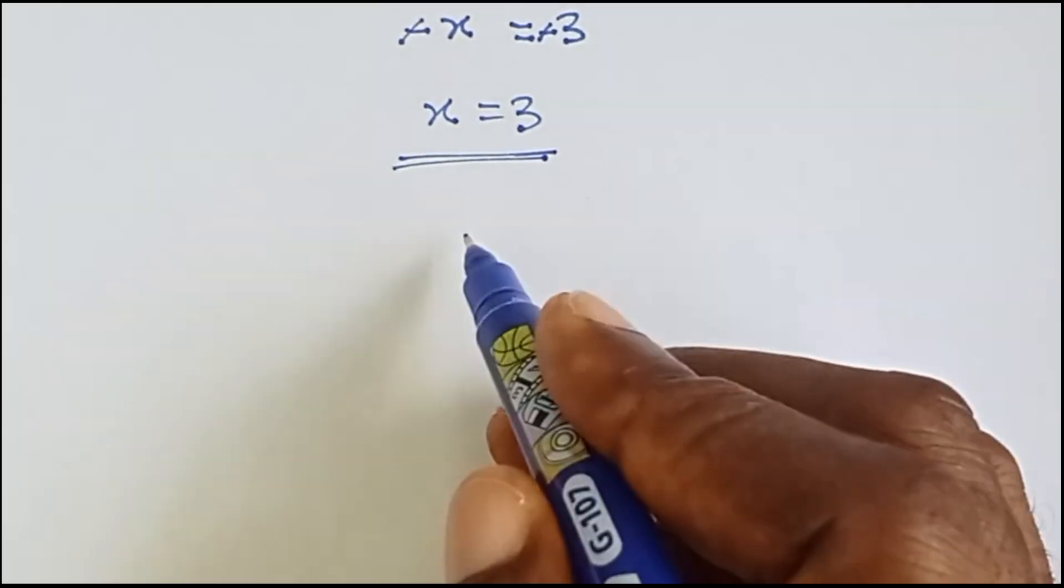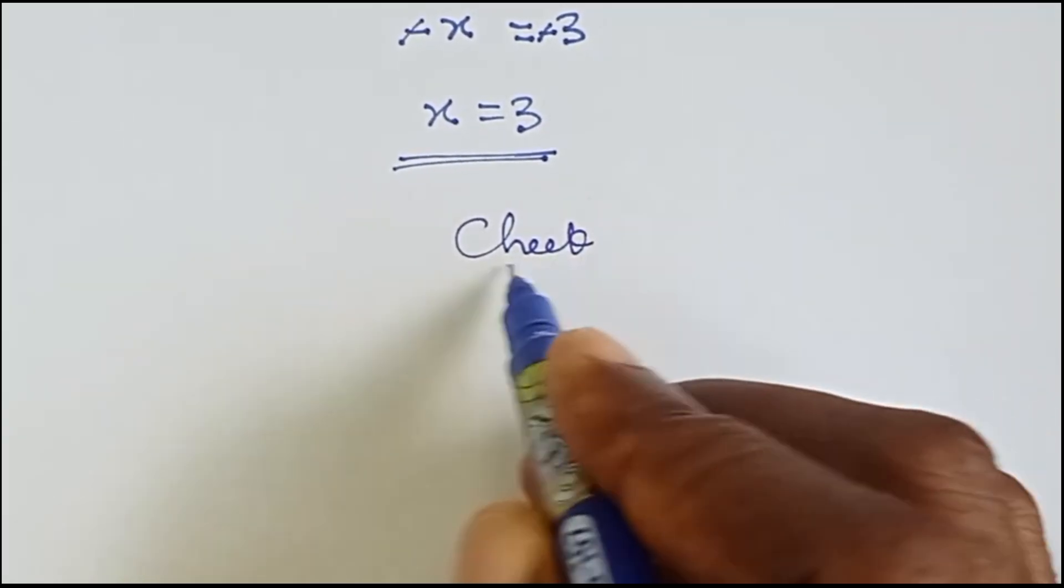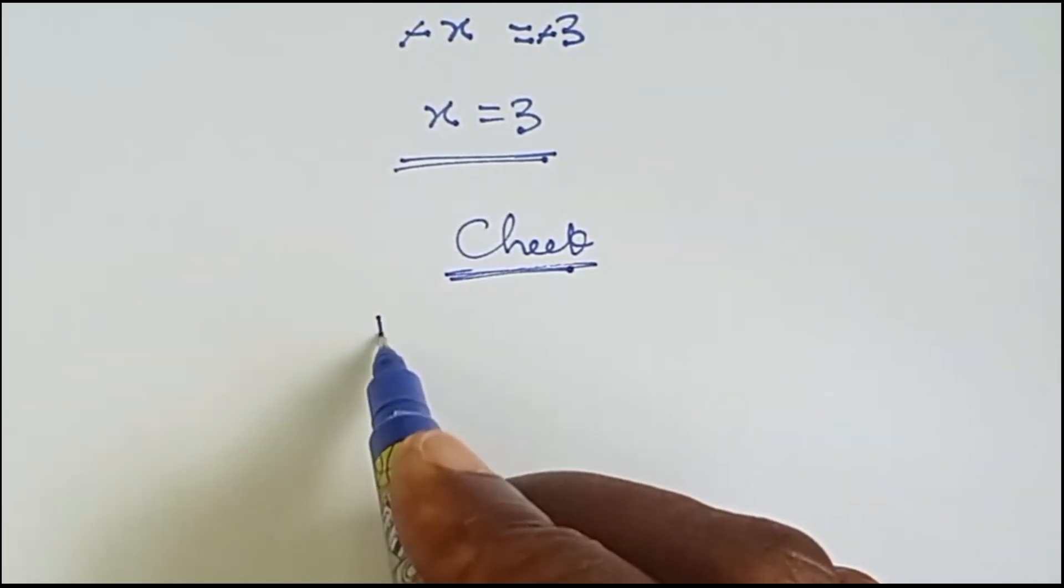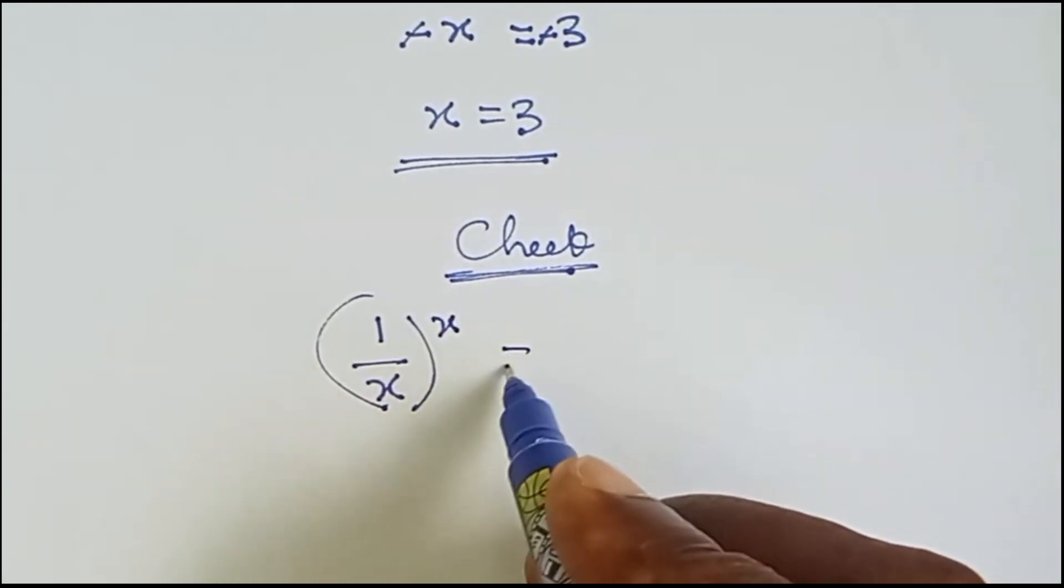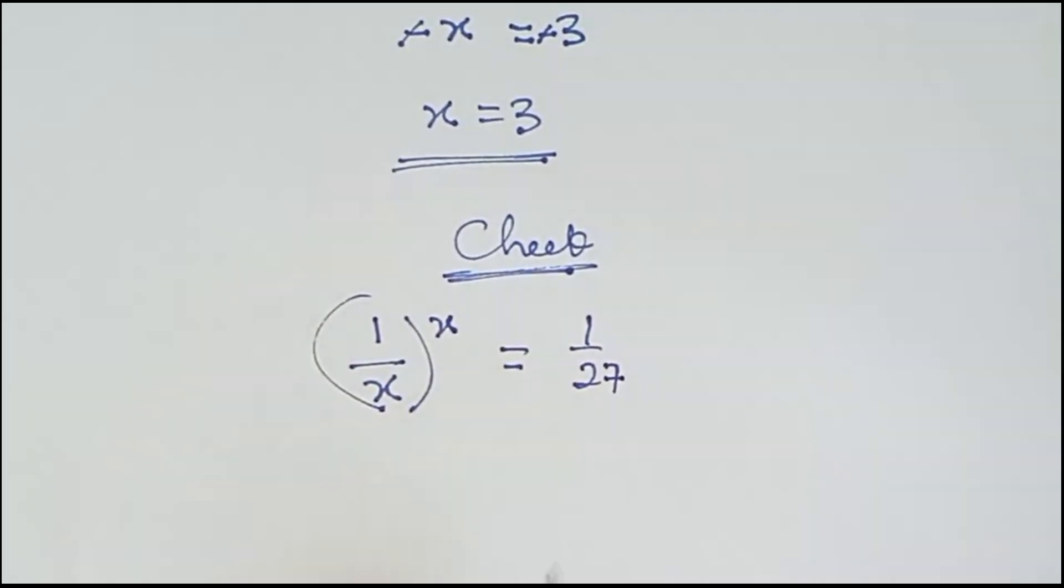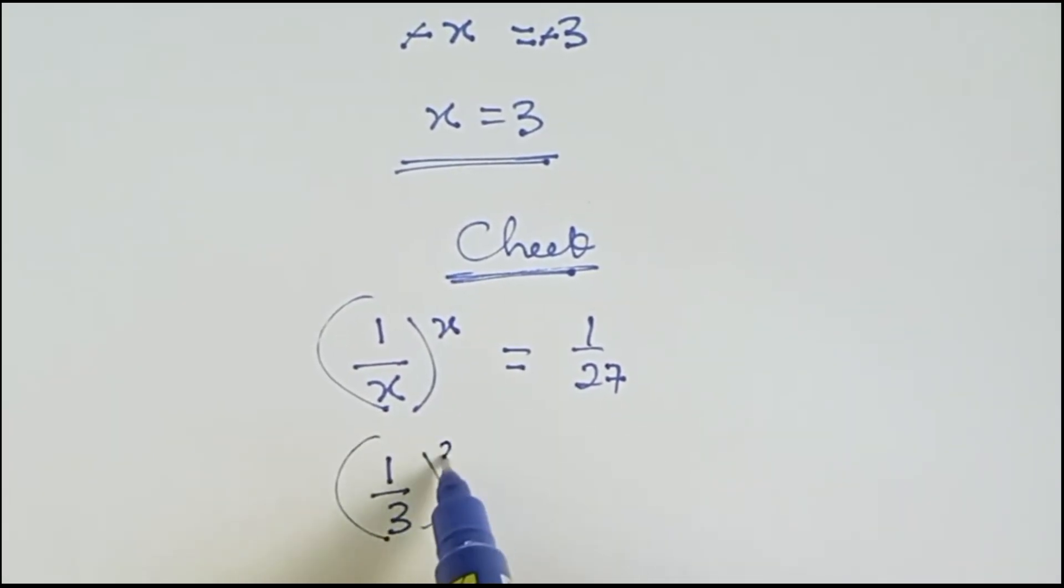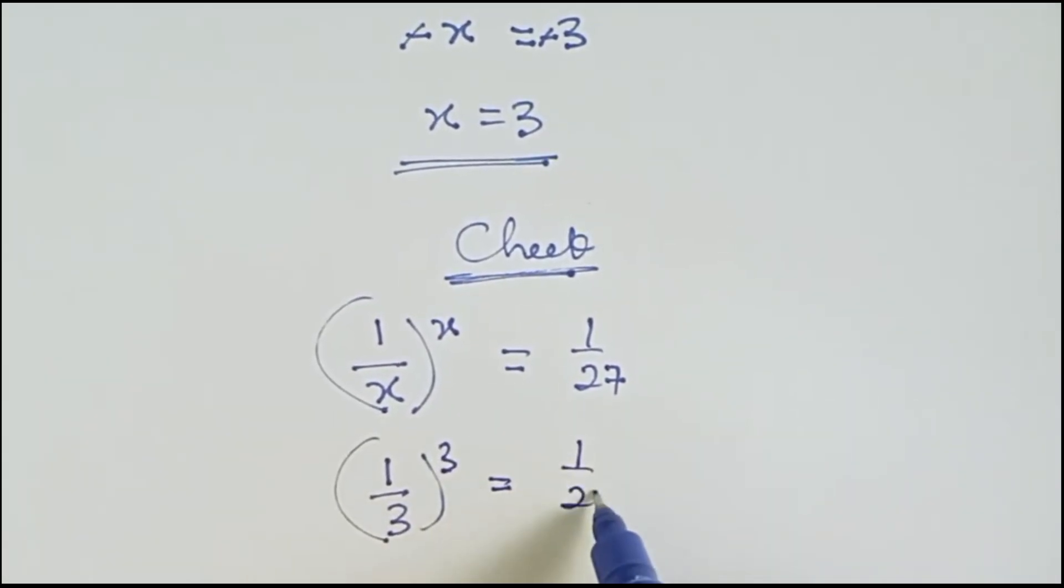Now let's check. Let's see if we are correct. We have 1 over x raised to the power x equals to 1 over 27. So our x is 3. Let's see. We have 1 over 3 raised to the power 3 equals to 1 over 27.